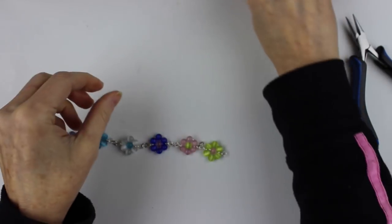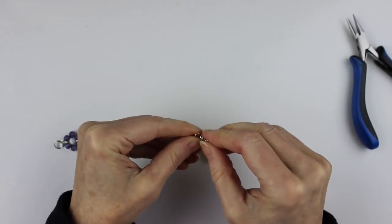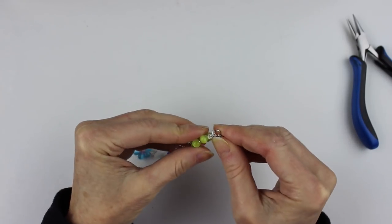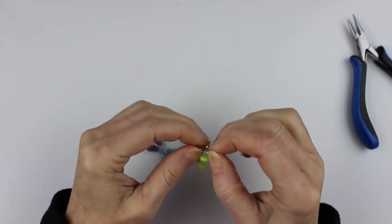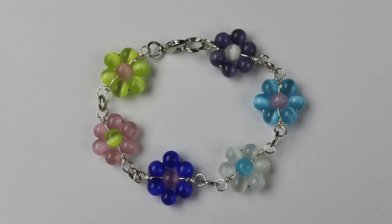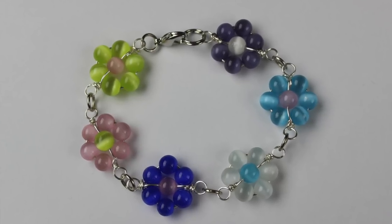And then for the lobster clasp, I have another jump ring and I just hook it onto the last loop like that and close it up. And there you have your beautiful daisy bracelet.